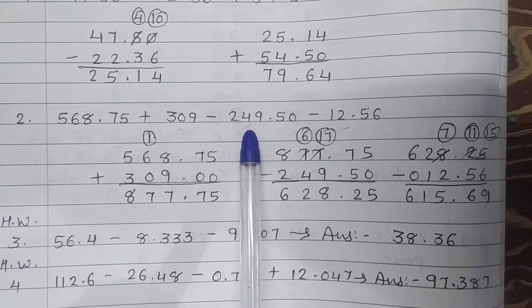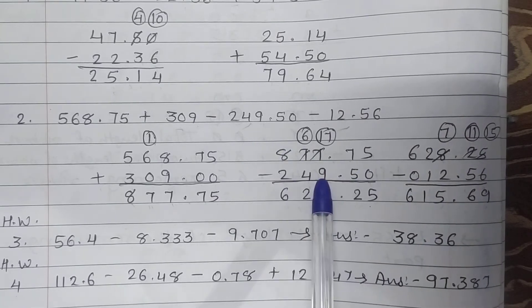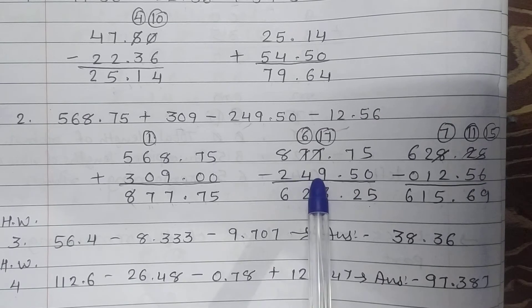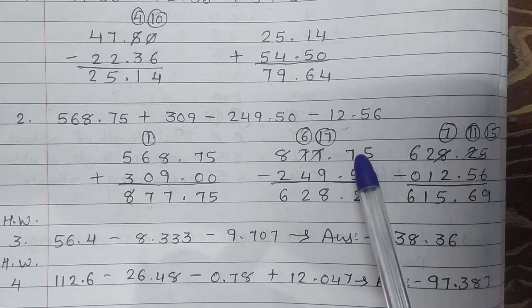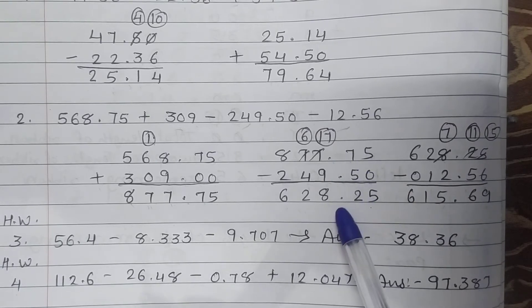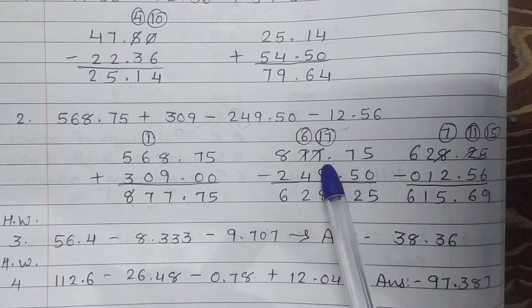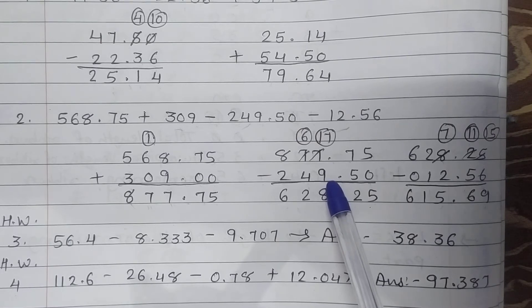Now subtract 249.50 from this. Minus 249.50. 5 minus 0 is 5, 7 minus 5 is 2. Point as it is. 7 minus 9 is not possible, so take 10 borrow.